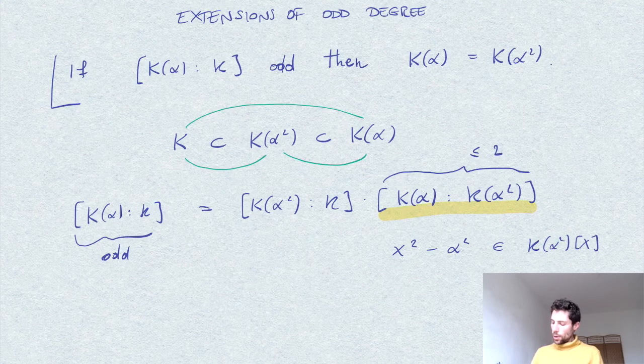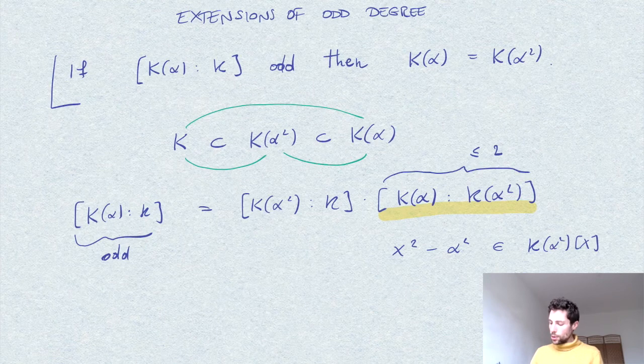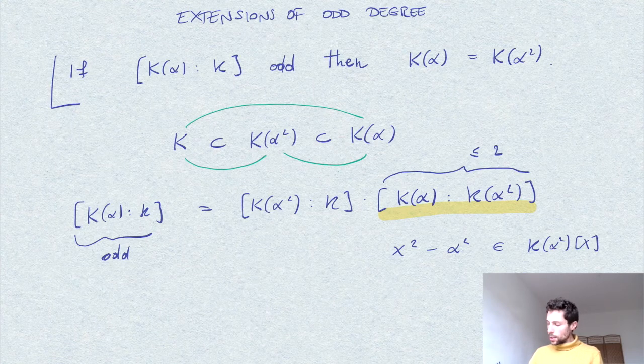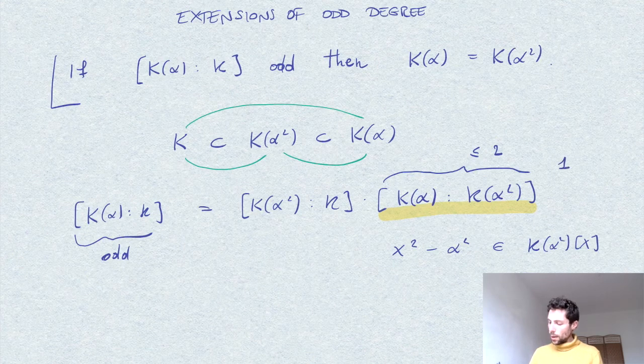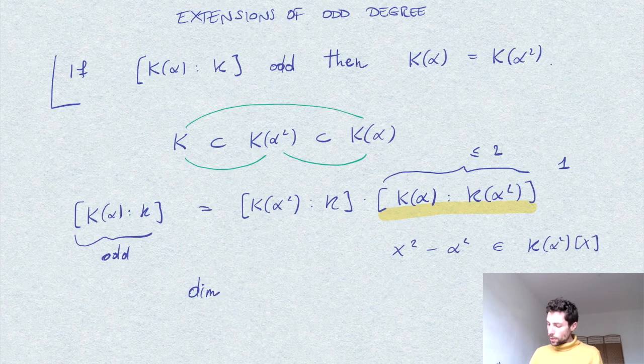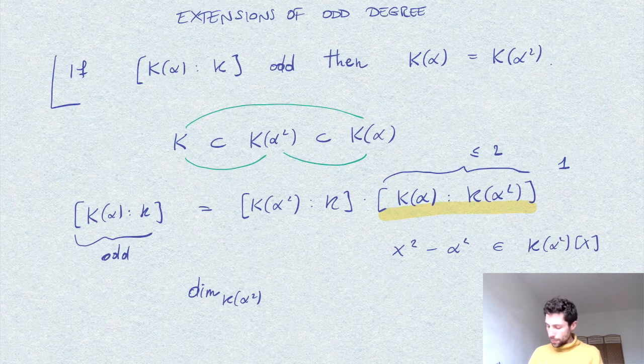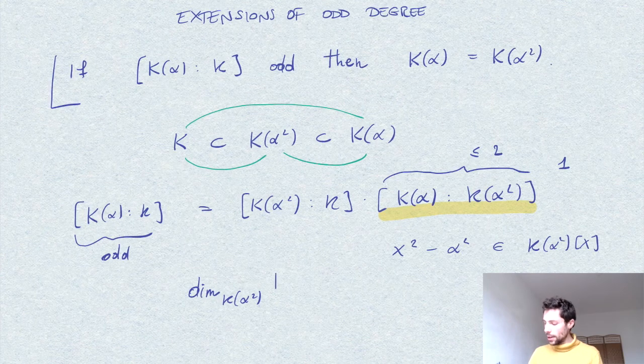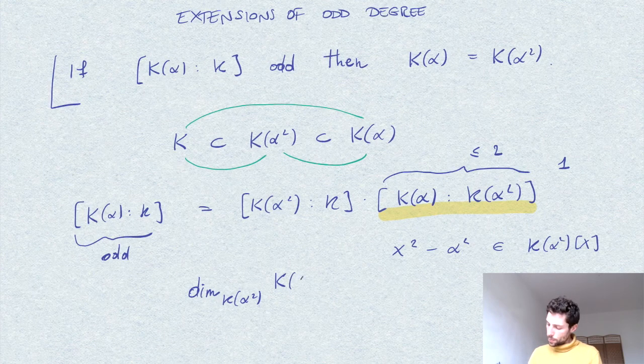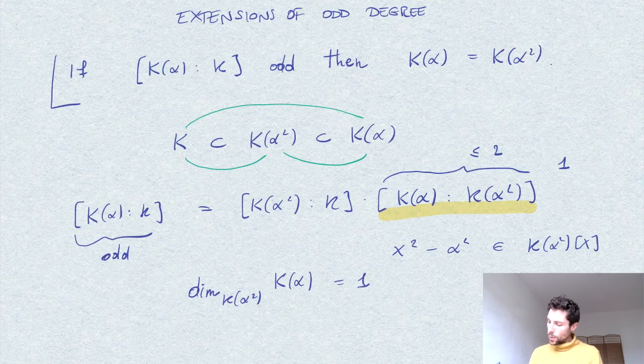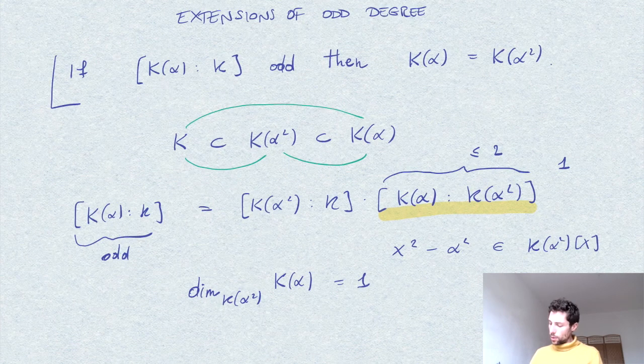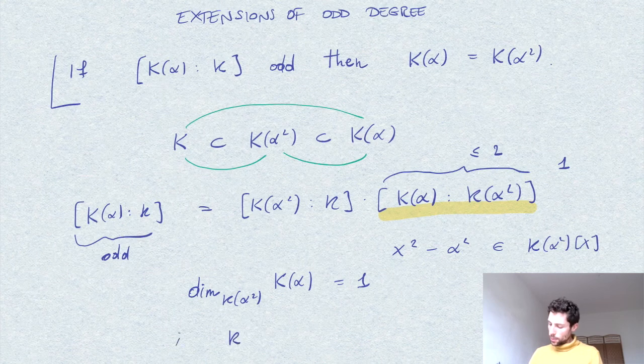Or, if you want to reason by thinking in terms of linear algebra, the fact that this degree is actually one means that the dimension over the field K(α²) of K(α) as a vector space is one. So as vector spaces of the same dimension, it means that K(α²) is equal to K(α).